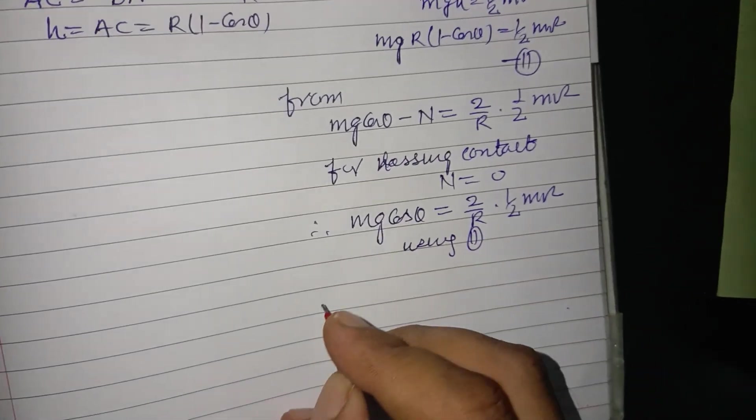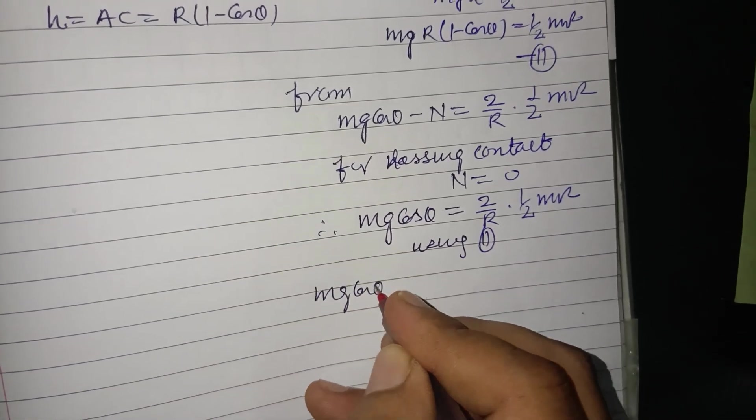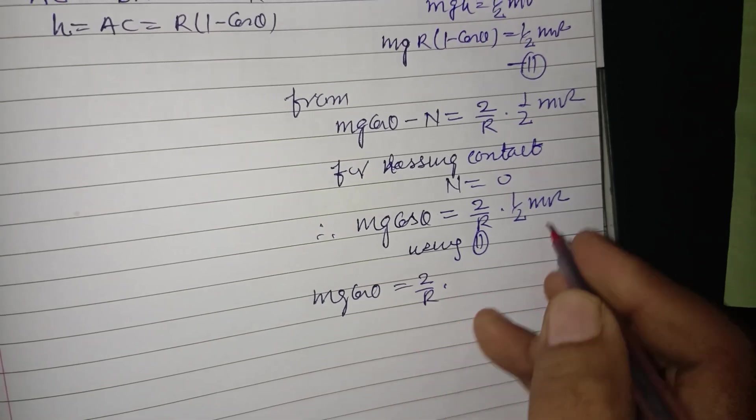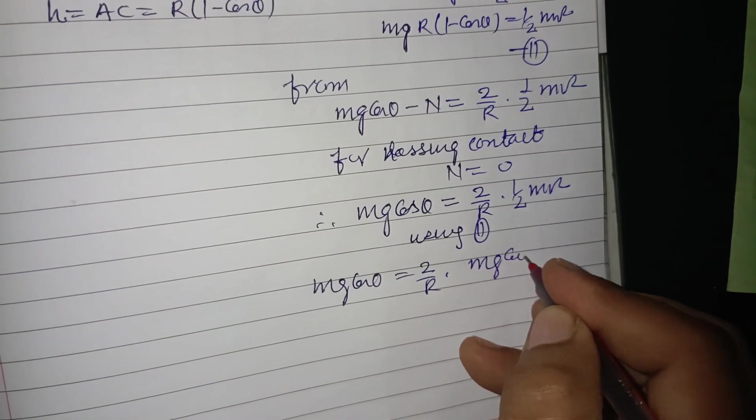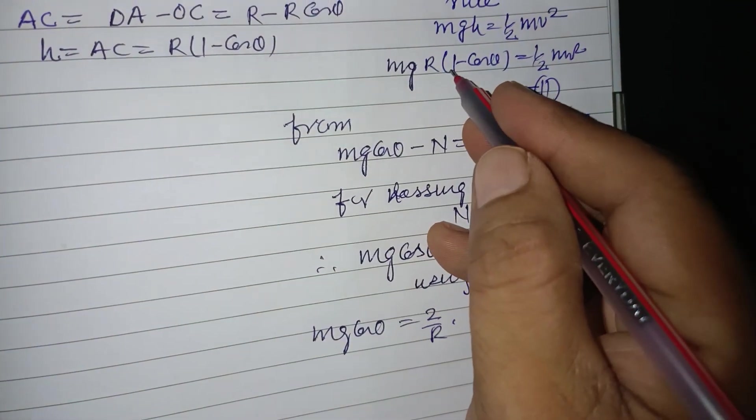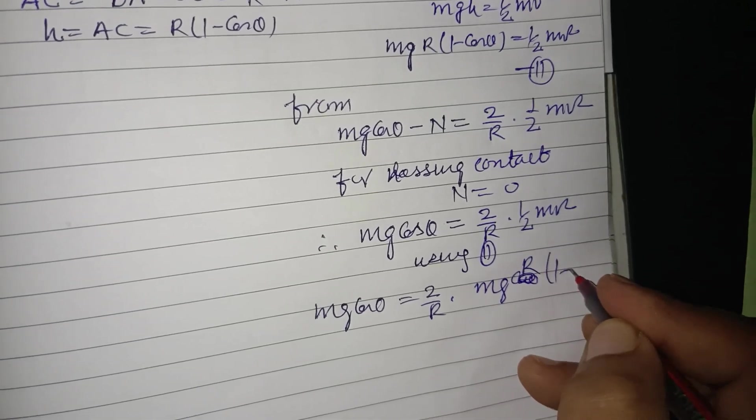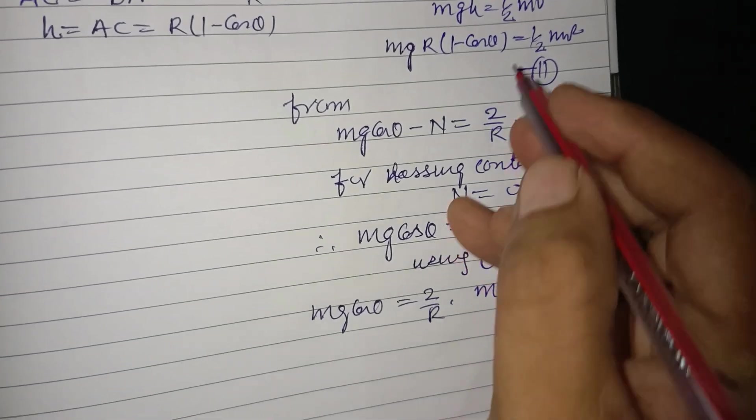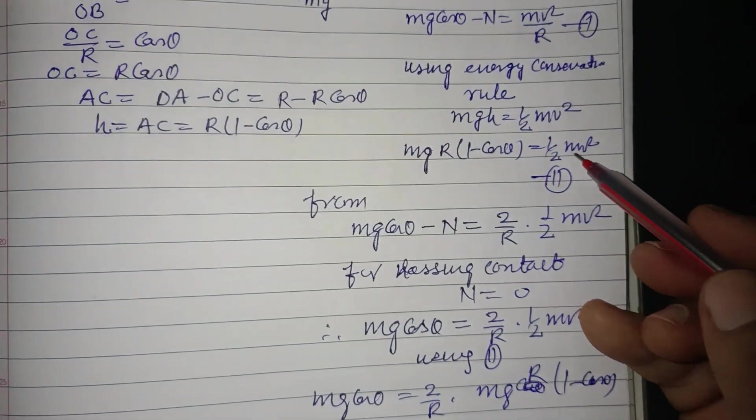Using the second equation, mg cos theta equals 2 over R into half m v squared, which is mgR (1 minus cos theta). This is the value of half m v squared from second equation here.